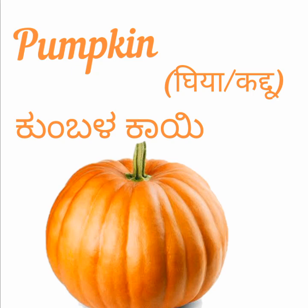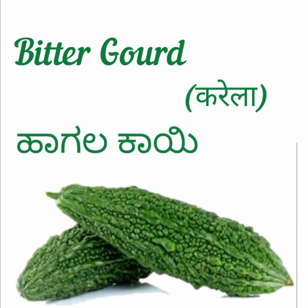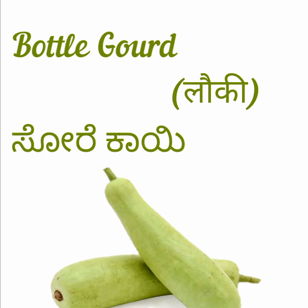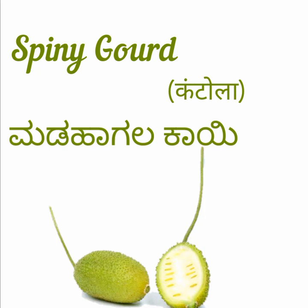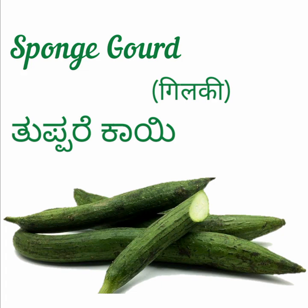Bitter gourd — haagala kai. Bottle gourd — sore kai. Ivy gourd — tonde kai. Spiny gourd — madha haagala kai. Sponge gourd — tuppare kai.